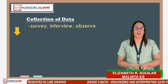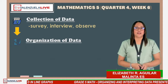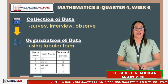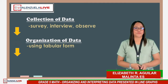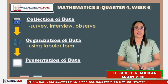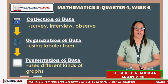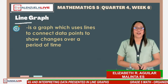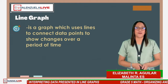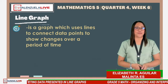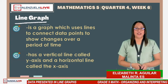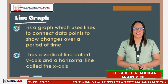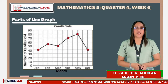After the collection of data, we organize it. In the organization of data, we use tabular form. After organization, we have the presentation of data. In presenting data, we use different kinds of graphs, and one of these is the line graph. A line graph is a graph which uses lines to connect data points to show changes over a period of time. It has a vertical line called the y-axis and a horizontal line called the x-axis.